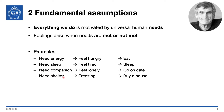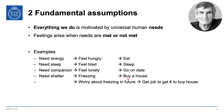We need shelter — we feel freezing, and that feeling makes us pay attention to this need, so we buy a house. Or perhaps we worry about freezing in the future, so we get a job and buy a house. We need a healthy body — if our body is not healthy we have pain in the back or something, and then perhaps we do some exercise to get rid of the back pain.